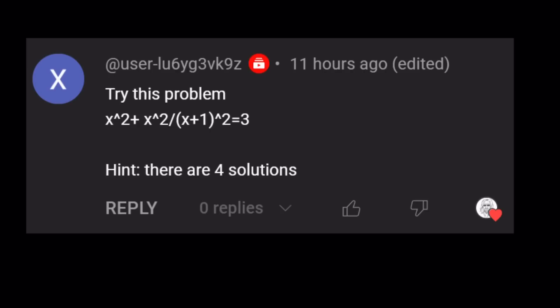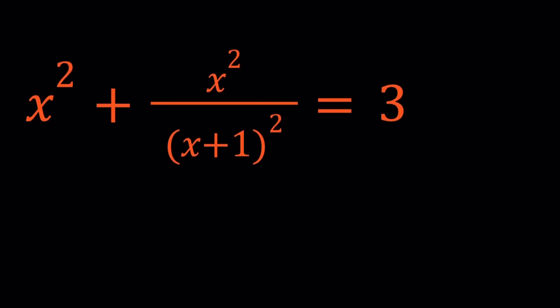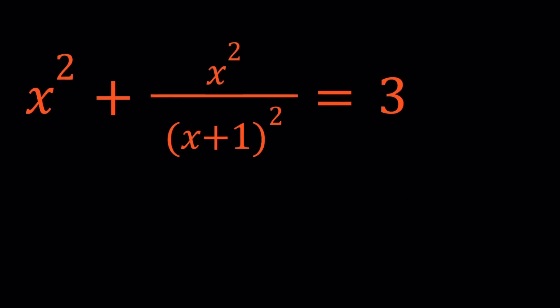So we're going to be solving this equation. Let's go ahead and take a look. We have x squared plus x squared divided by x plus 1 squared equals 3.